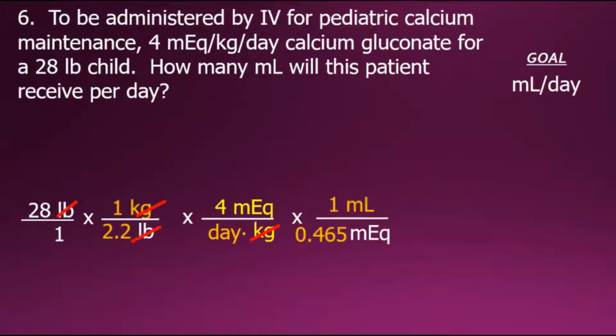Giving this fraction of one, which allows us to cancel out that common unit of milliequivalents in the numerator and the denominator, we now have milliliters per day. We can move on to multiplication of the fractions.